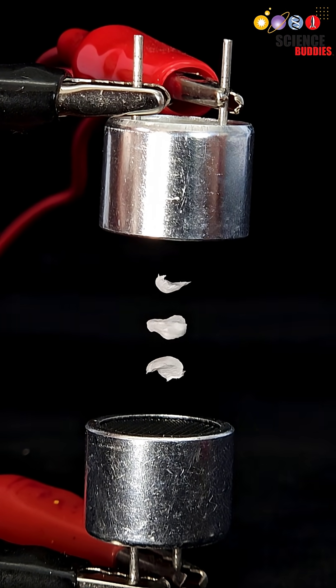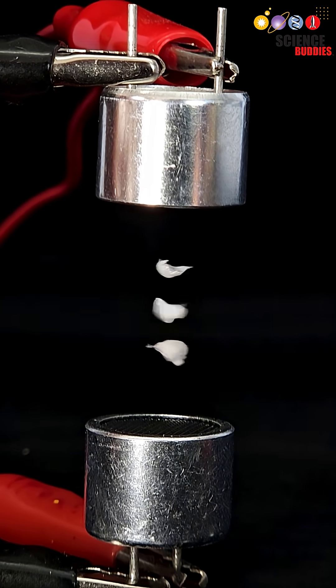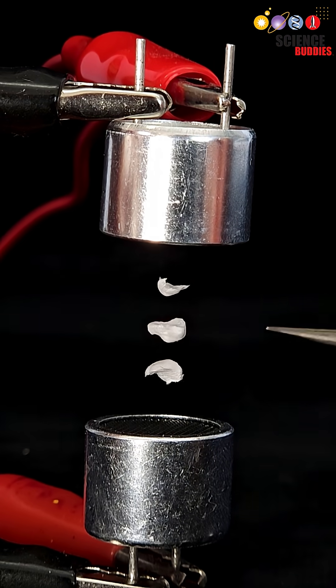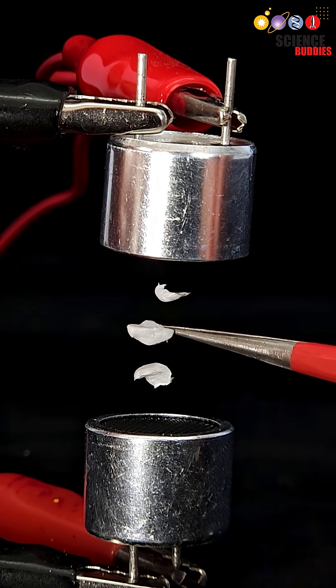These opposing waves create a standing wave which has nodes of constant air pressure. Lightweight objects like these pieces of foam can get stuck in these nodes and levitate in midair.